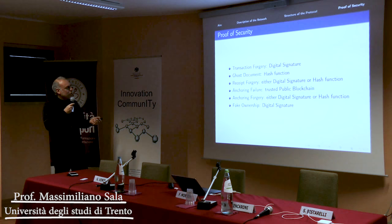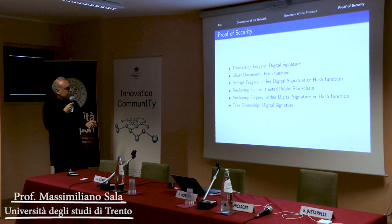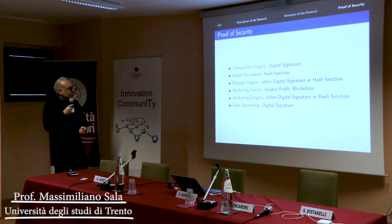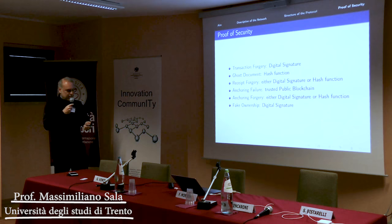Transaction forgery is prevented by the security of the digital signature. Ghost documents are prevented by the hash function. Receipt forgery is prevented using either digital signature or hash function. Anchoring failure is prevented by using trusted public blockchains. Anchoring forgery is prevented using digital signature or hash function. And fake ownership — digital signature defends everything. We have theorems and proofs, but I just wanted to give you something sketchy. Thank you.